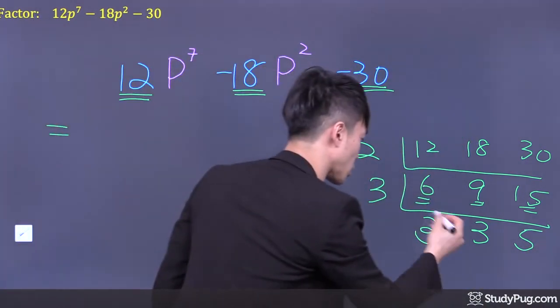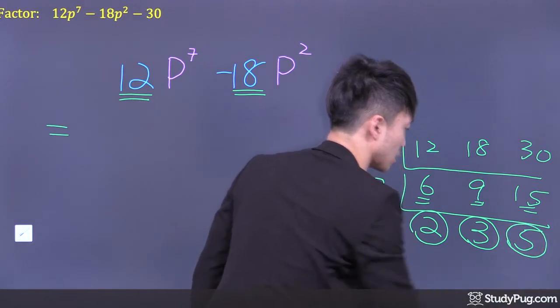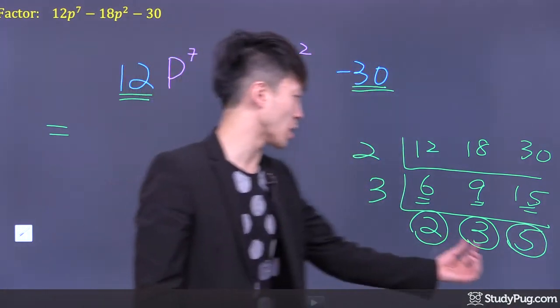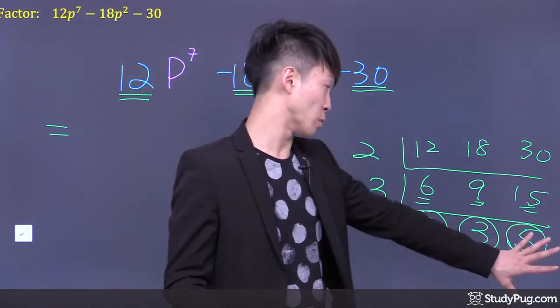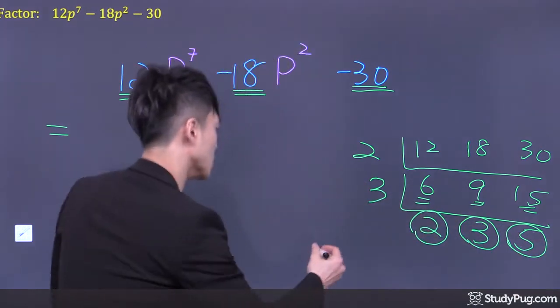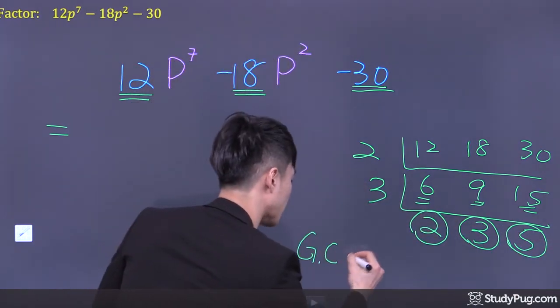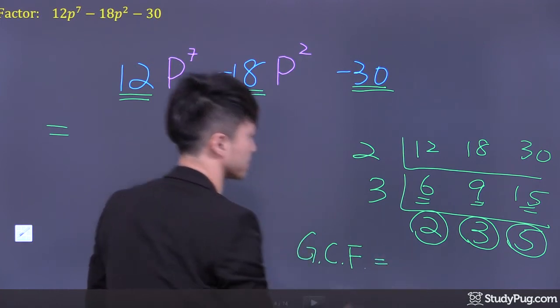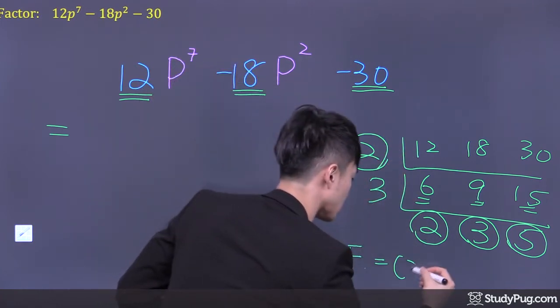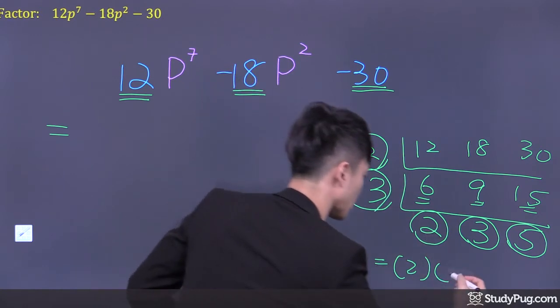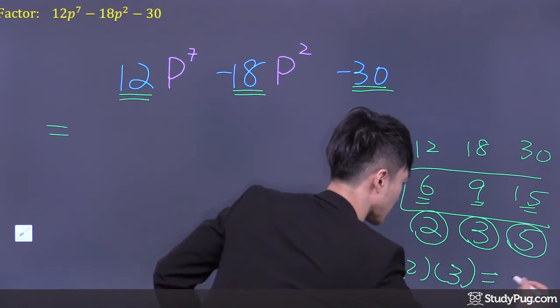Now focus on the three numbers right here. Is there a common factor between these three numbers? No. Then we must stop right here. So the greatest common factor is 2 times 3. We get 6.